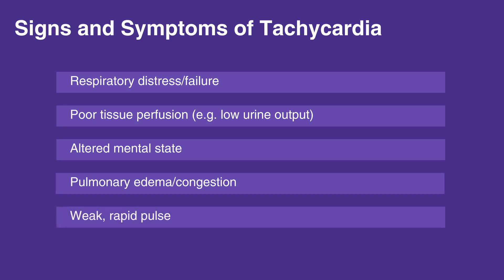There are several kinds of tachycardia, and they can be difficult to differentiate in children on ECG due to the elevated heart rate. The following is a list of the kinds of tachycardia and what happens during each specific tachycardic event.